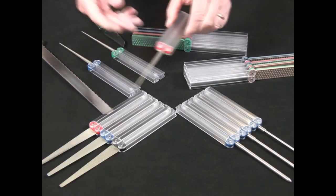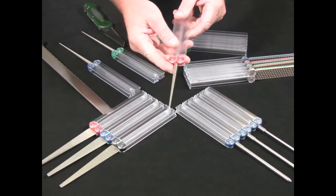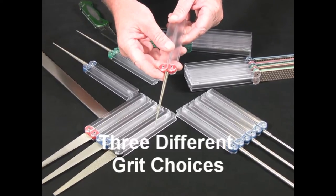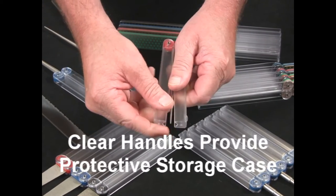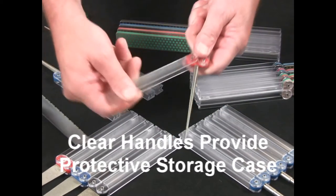And our DMT Cerity Knife Sharpener, offered in three different grits: coarse, fine, and extra fine models, with precision clear folding handles that fold up to form a protective storage case.